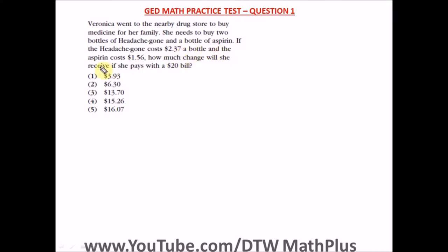A bottle and the aspirin cost $1.56. How much change will she receive if she pays a $20 bill? Okay, so how much change will she receive? She pays a $20 bill so we need to know the total amount she's going to spend, and that's the amount of two bottles of headache gun and one bottle of aspirin.